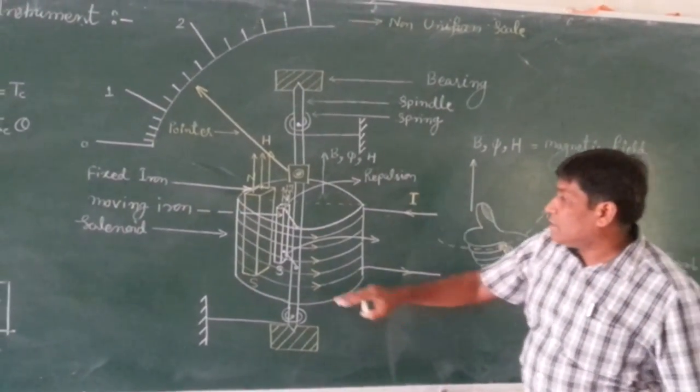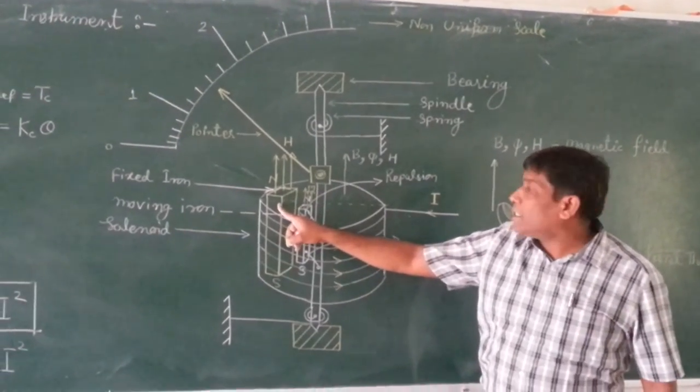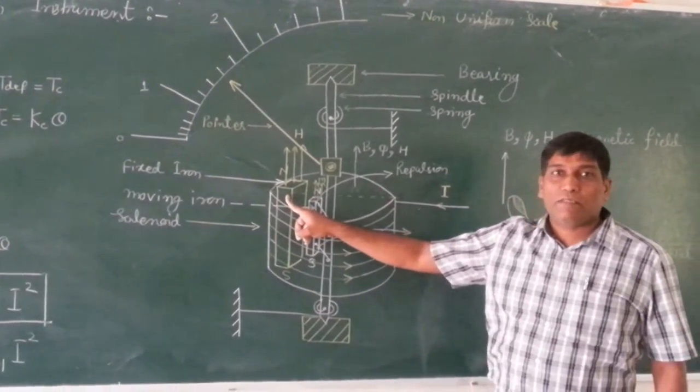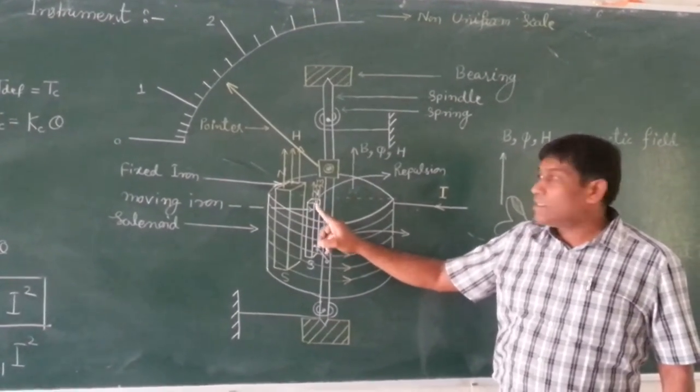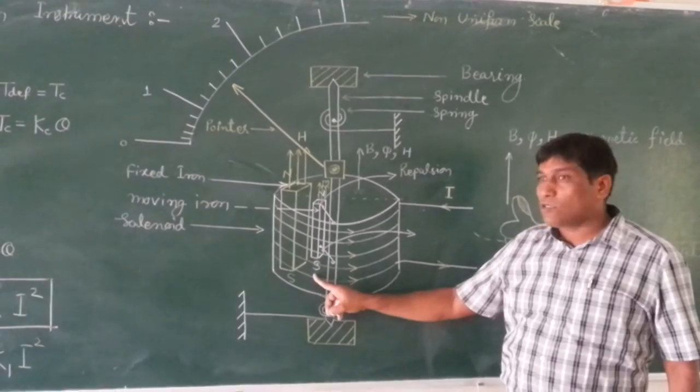And due to this magnetism, same magnetism is generated in the fixed iron piece and same magnetism is generated in the moving iron piece. This is north pole, this is south pole, this is north pole, this is south pole.